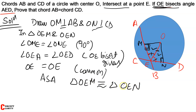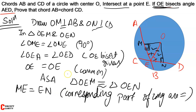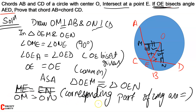Hence proved. And when these two triangles are congruent, it is easy to say that OM is equal to ON. Why? Because the corresponding parts of congruent triangles are also equal (CPCT).